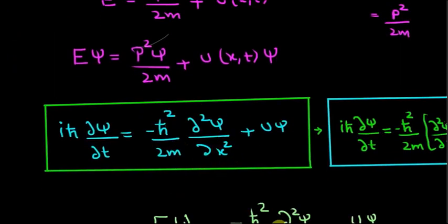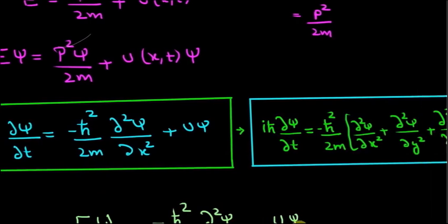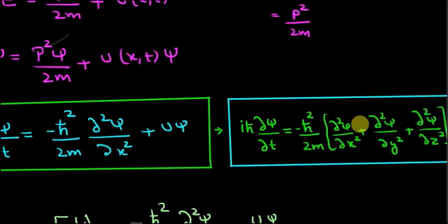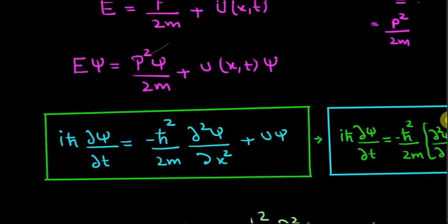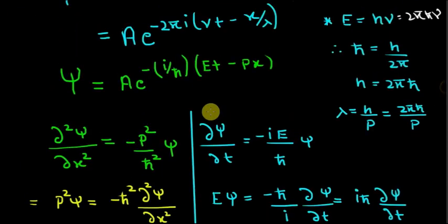Now this is the one-dimensional case. If we have to convert it into three-dimensional, this thing will split into three, that is x, y, and z axis.